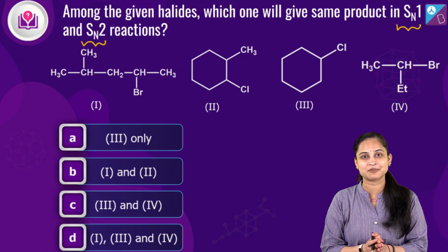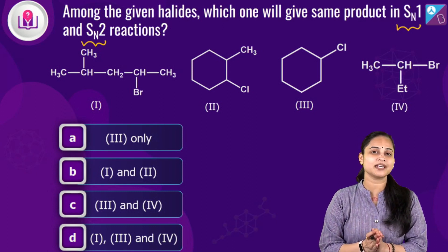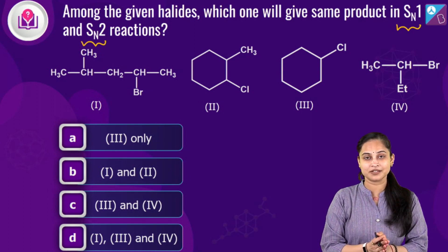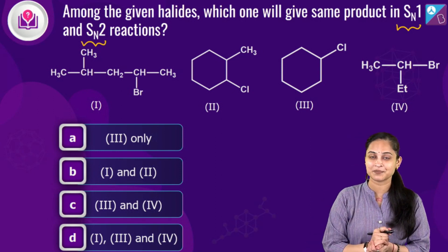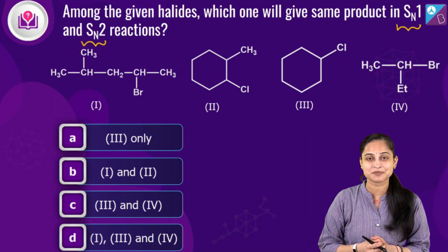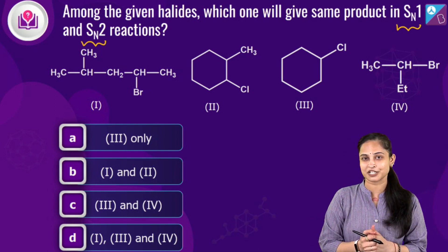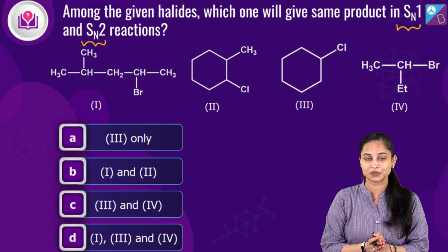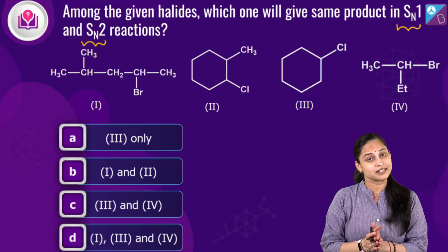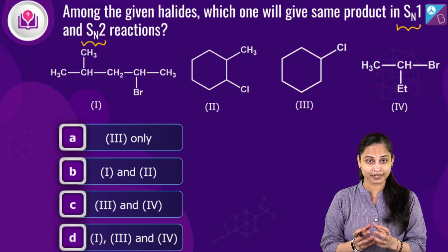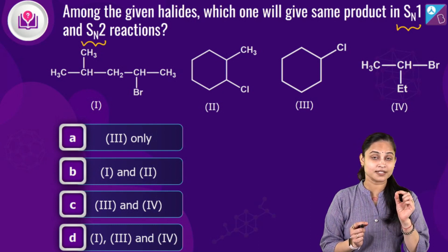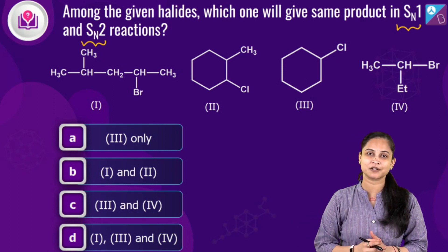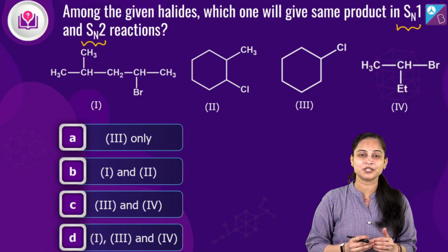The rate-determining step in SN1 depends on the stability of the carbocation formed, and there is the possibility of rearrangement to convert it into a more stable carbocation. In SN2 — substitution nucleophilic bimolecular — the reaction takes place in one concerted step: bond formation and bond breaking occur simultaneously, as the nucleophile donates its electrons into the antibonding orbital of the carbon directly attached to the leaving group.